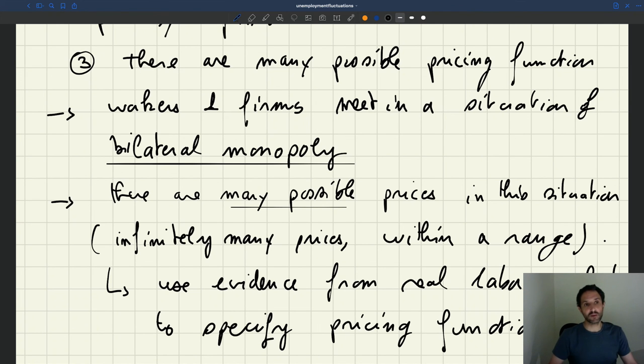So that's very much the same approach as what we did with the matching function. We said there's a matching function that says how workers and firms get together, but then we looked at the empirical evidence and the empirical evidence suggests that matching functions have constant returns to scale and so on and so forth, and so we used that when we made assumptions about the matching function. So here we'll do exactly the same - we're going to look at evidence to try to specify our pricing function.